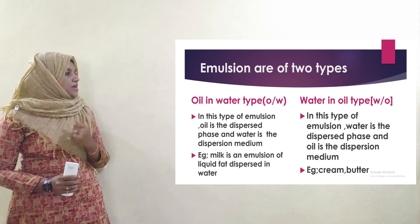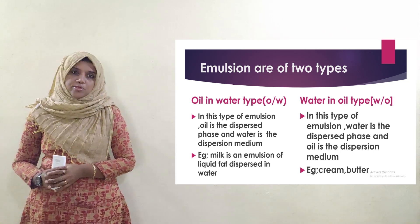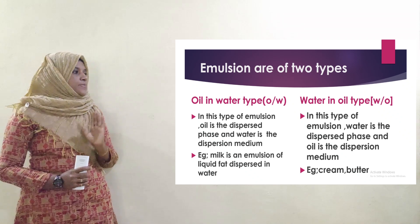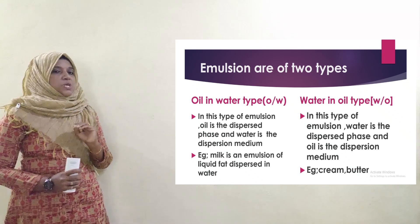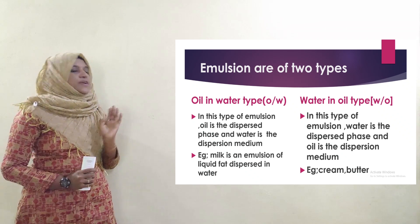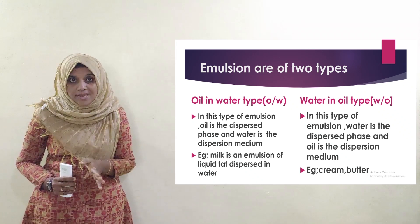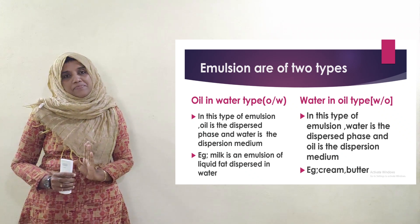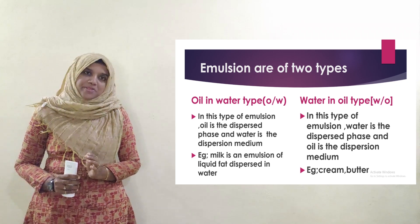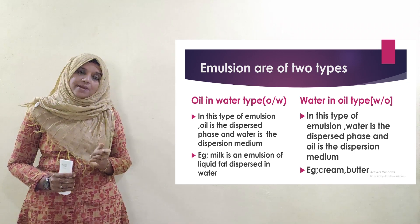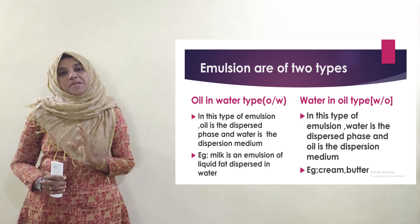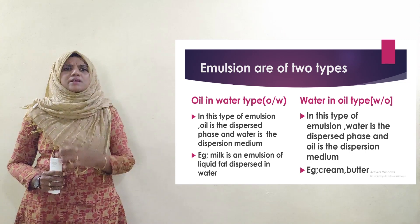First, we will discuss oil-in-water type. In this type of emulsion, oil is the dispersed phase and water is the dispersion medium. That is oil-in-water type. Oil is dispersed phase, water is dispersion medium. For example, milk.